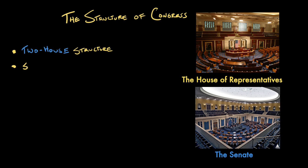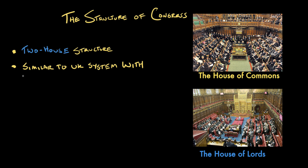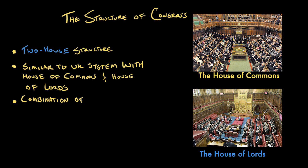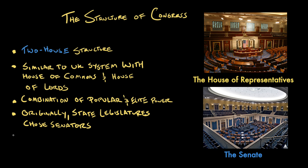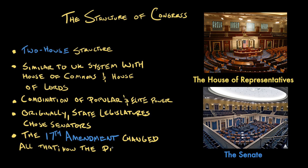A second reason for this structure is the influence of the British example. The British had both the House of Commons and the House of Lords — the House of Commons being more subject to popular pressure, while the House of Lords was an elite aristocracy. The founders also wanted a combination of popular and elite power. It was thought that the Senate would fill that elite role, in part because initially senators were chosen by state legislatures rather than voters directly. Senators were appointed until the passage of the 17th Amendment, which gave state legislatures significant influence over who went to the national government.